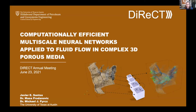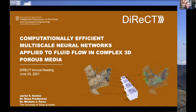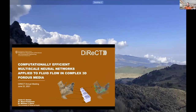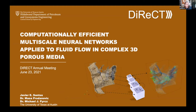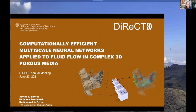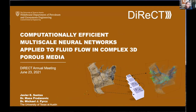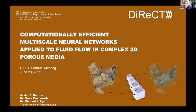Javier, are you here with us? Javier has been working on how to take deep learning and build flow circuits that are able to make predictions very quickly for intergranular flow. Now, Javier, having done that, is looking at how to move across scales so that we can get closer to flow-relevant scales for forecasting. Go ahead and take it away.